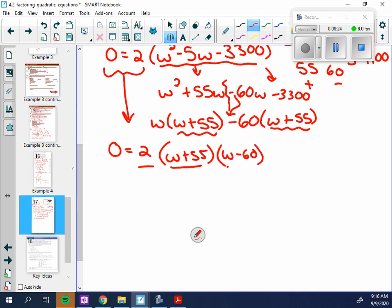One of these things has to be equal to 0. This one is not going to give me any roots, because 2 will never equal 0. What makes this one 0? If w was negative 55. What makes this one 0? If w was 60.